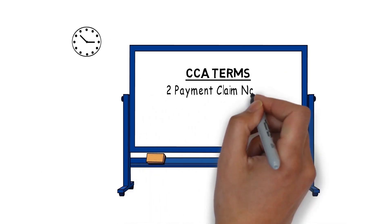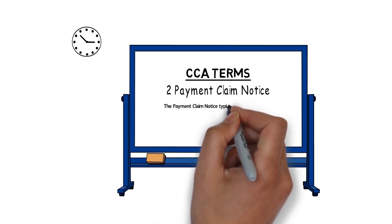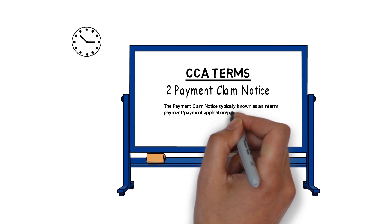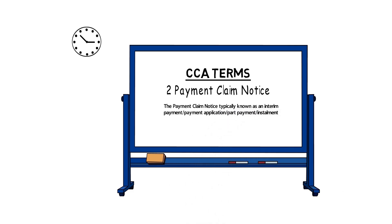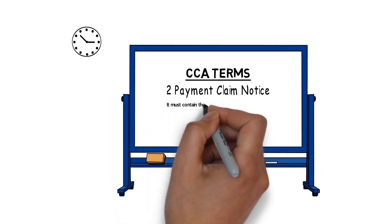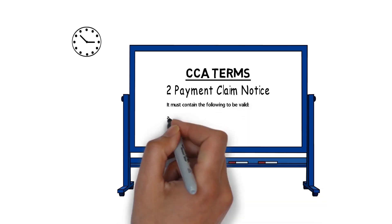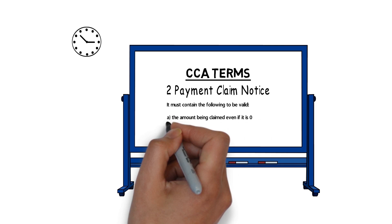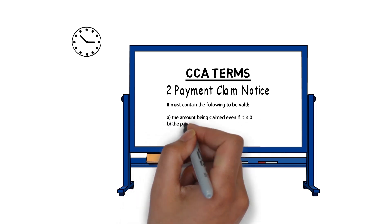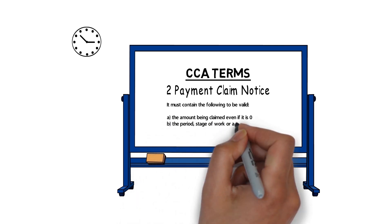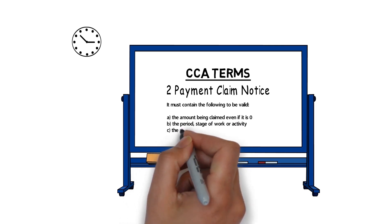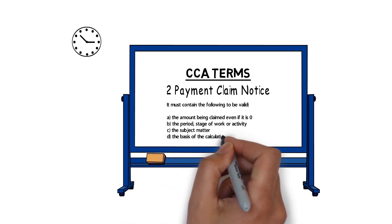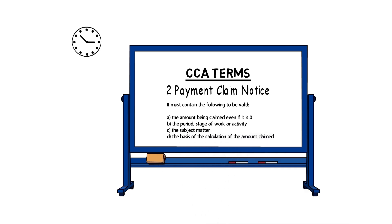The payment claim notice — typically known as an interim payment, or payment application, or part payment, or instalment — must contain the following to be valid: A. The amount being claimed, even if it is zero. B. The period, stage of work or activity. C. The subject matter. And D. The basis of the calculation of the amount claimed.